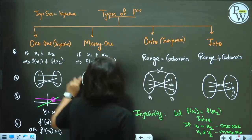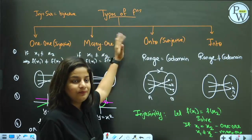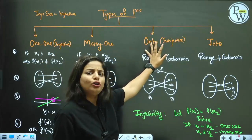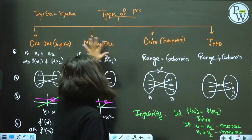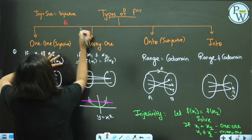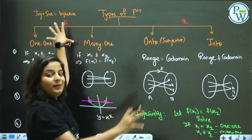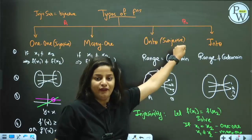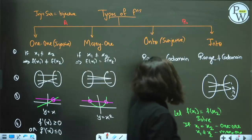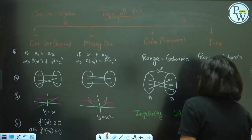Which combinations are possible? A function cannot be both many-to-one and one-to-one. But a function can be one-to-one and onto, or one-to-one and into. Think of one-to-one/many-to-one as category A and onto/into as category B. You can combine across A and B, but not within A or within B. When one-to-one and onto are combined, that's bijective.